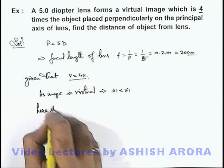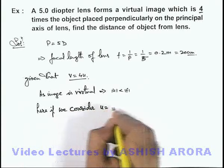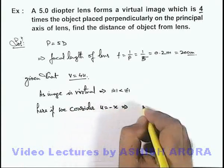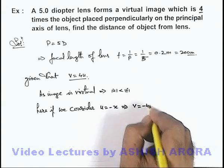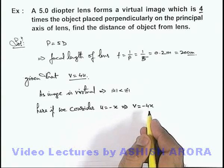So here if we consider u equals minus x, this implies the value of v will be minus 4x. Image will also be produced on the same side as that of object.